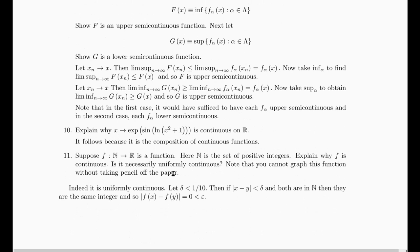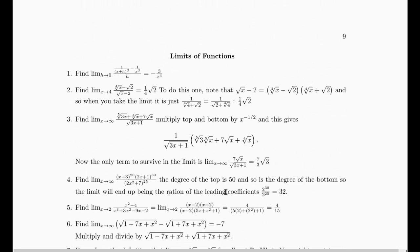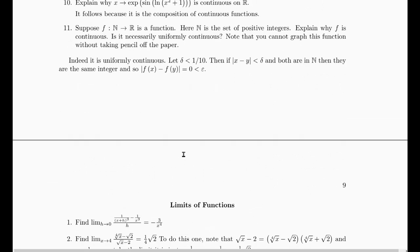Suppose you have a function defined on the natural numbers. Then I claim it is uniformly continuous on the natural numbers. Let delta be less than 1/10 and bigger than zero. Then if |x minus y| is less than delta, and both x and y are natural numbers, then they are the same integer. So the absolute value of their difference is zero, which is less than epsilon. It's uniformly continuous, and notice it did not matter how the function was defined.